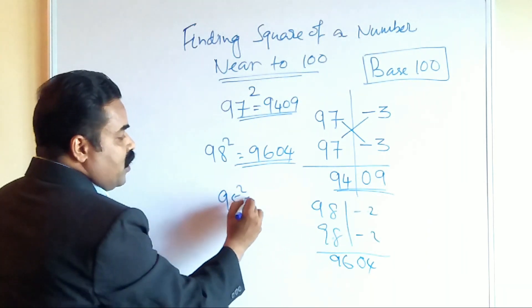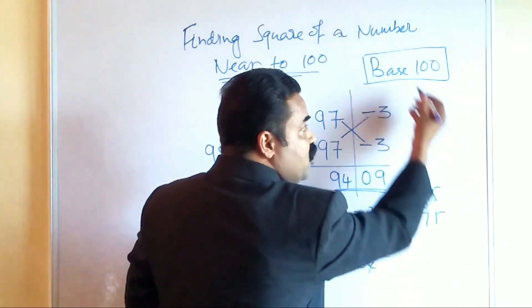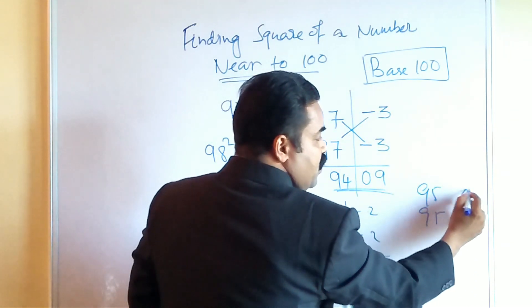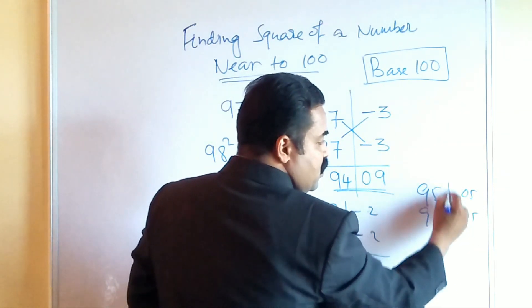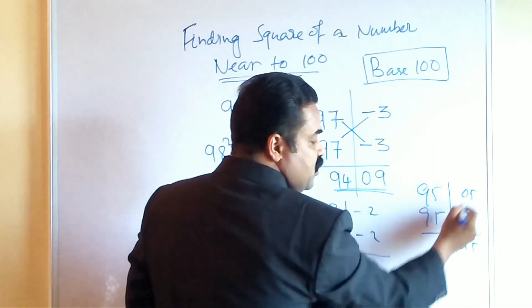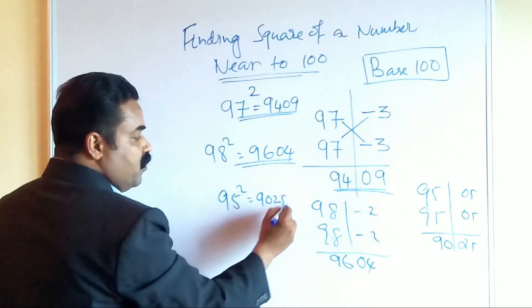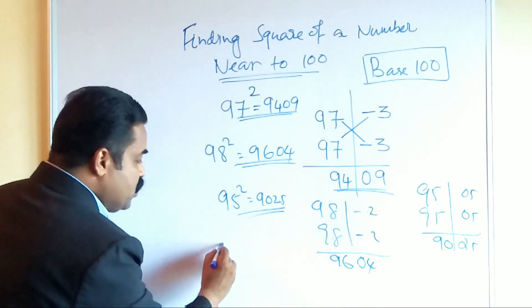You want to find out 95 square. What is 95 square? 95, 95. Deviation is what? 05. Again 05. So 5 times 5 is 25. 95 minus 5 is 90. So your answer will become 9025.